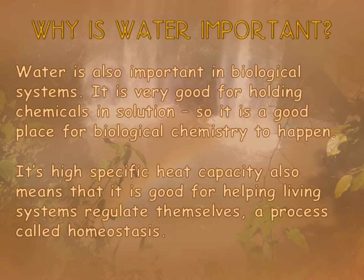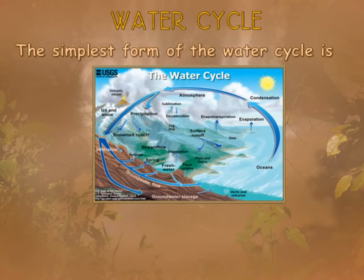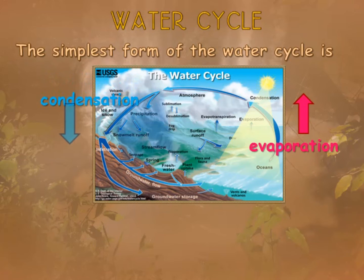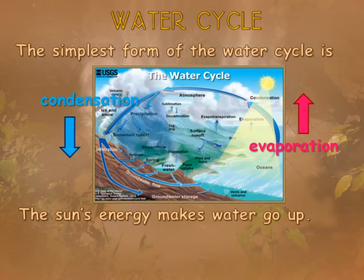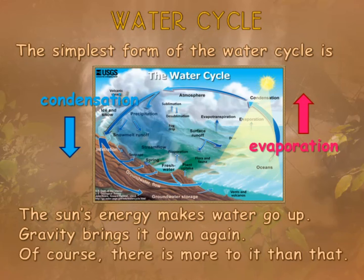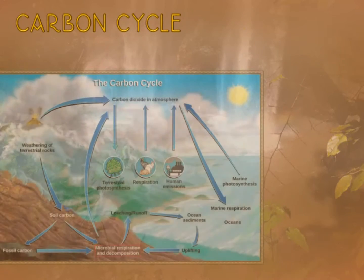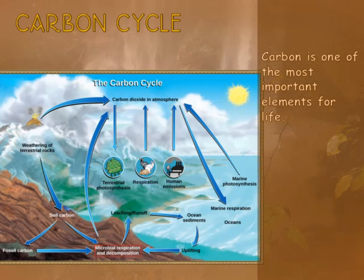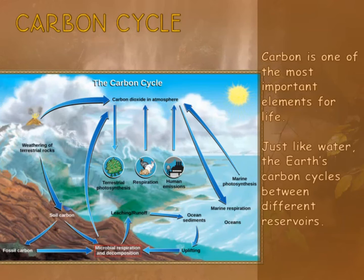If a living system loses homeostasis, then it very quickly becomes not a living system anymore. So if we want to summarize the water cycle in its simplest form, it boils down to evaporation and condensation — the sun's energy makes water go up, and gravity brings it back down again. Of course there's a little bit more to it than that, as the diagram shows. Next, we're going to look at the carbon cycle. Although it's not as cyclic as the water cycle, it is still easy to see how carbon moves around to different reservoirs in the Earth's system.